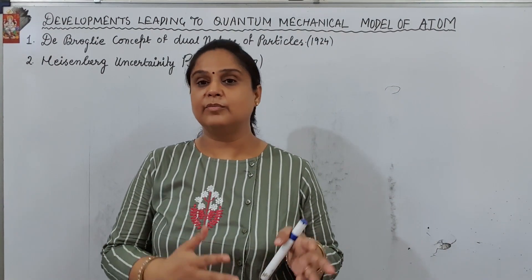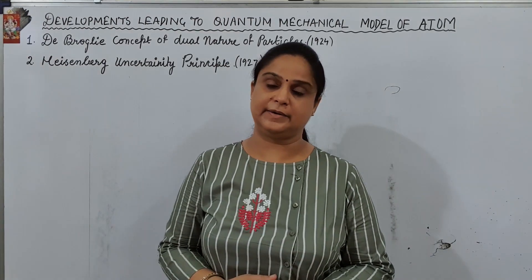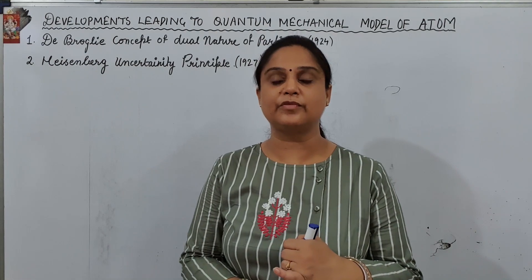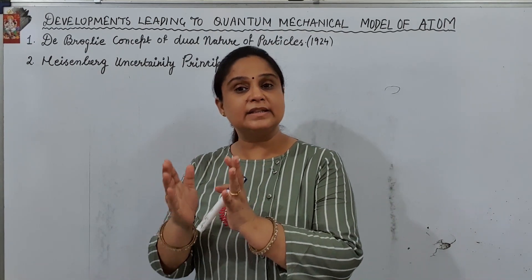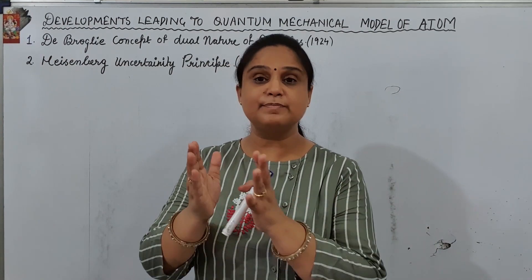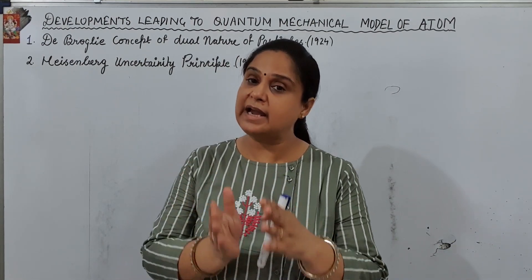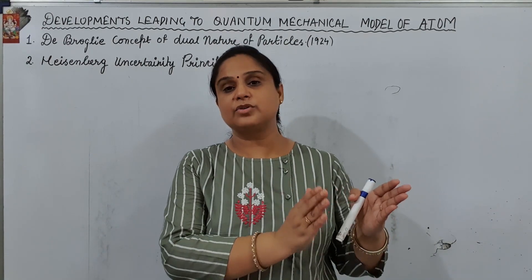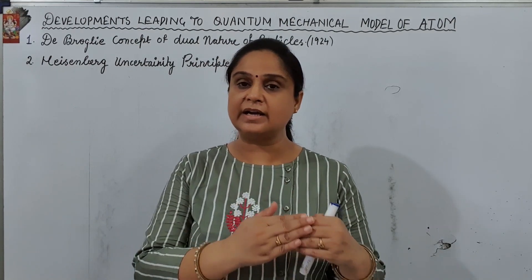Although we have learnt Bohr's model of atom which was given by Niels Bohr in 1913. But what was the problem in that? Bohr's model of atom could not explain the splitting of the spectral line in the electric field as well as in the magnetic field. The splitting of the spectral line in the magnetic field is called the Zeeman effect and the splitting of the spectral line in the electric field was called the Stark effect. So it could not explain the Stark and Zeeman effect.